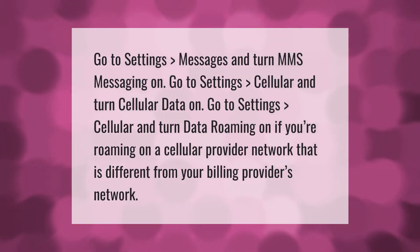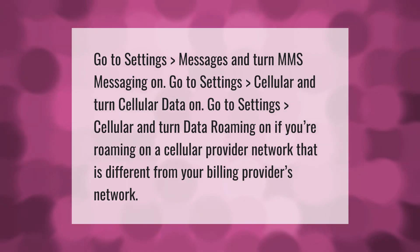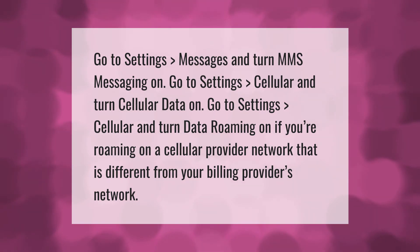Go to Settings > Messages and turn MMS Messaging on. Go to Settings > Cellular and turn Cellular Data on. Go to Settings > Cellular and turn Data Roaming on if you're roaming on a cellular provider network that is different from your billing provider's network.